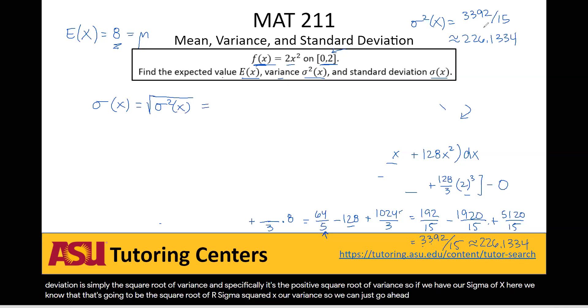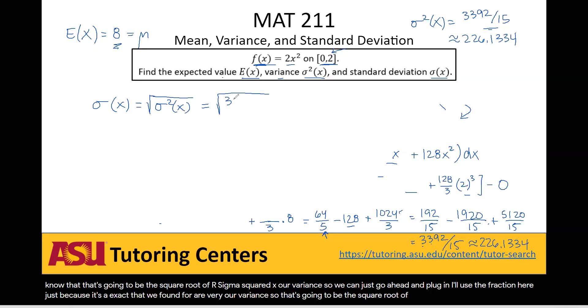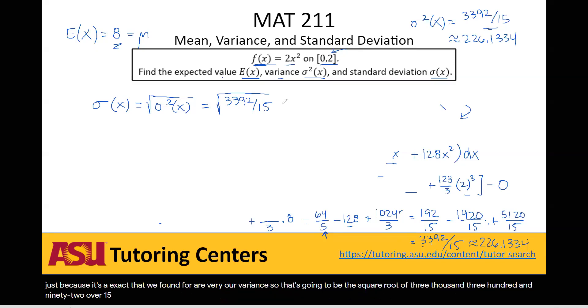So we can just go ahead and plug in, I'll use the fraction here just because it's exact, that we found for our variance. So that's going to be the square root of 3,392 over 15, which is equal exactly to 8 times the square root of 795 over 15, and approximately equal to 15.0377.